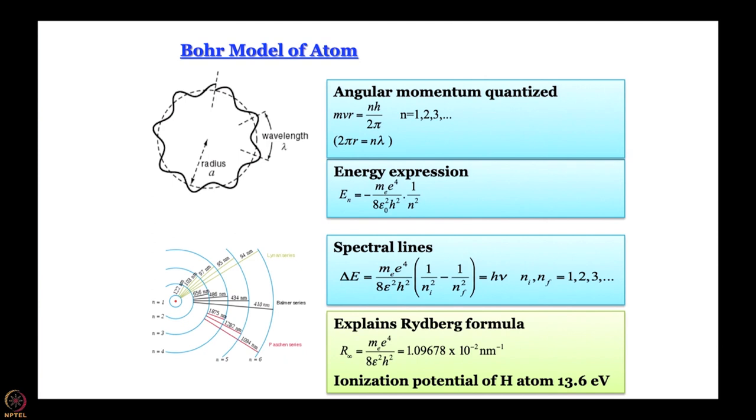One can also work out the ionization potential for the hydrogen atom, and the experimental value of 13.6 electron volts is reproduced very nicely using Bohr theory. The success of Bohr theory is that it can give very precise values of physical quantities associated with the hydrogen atom.